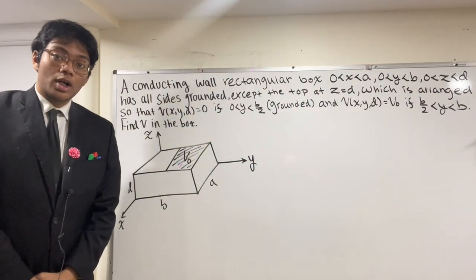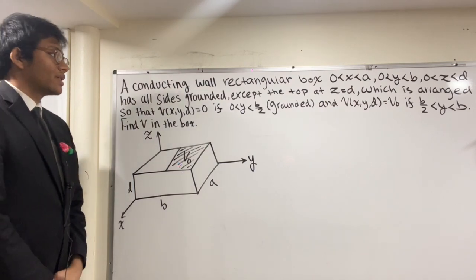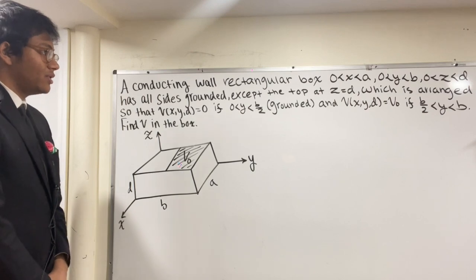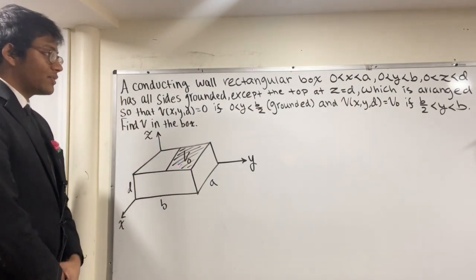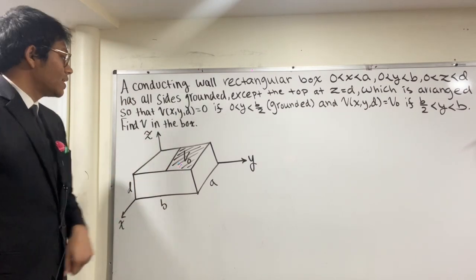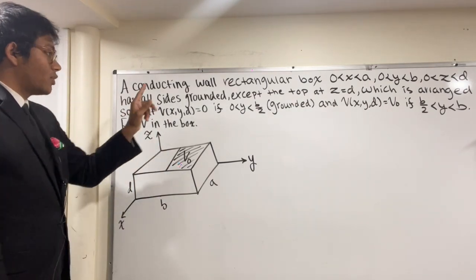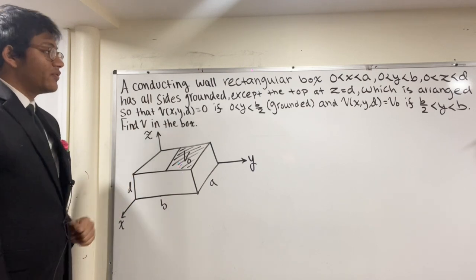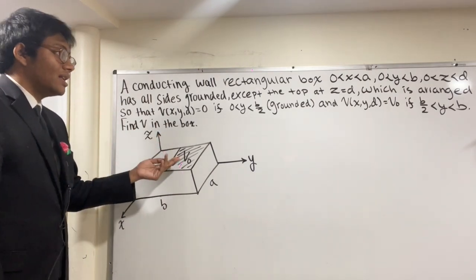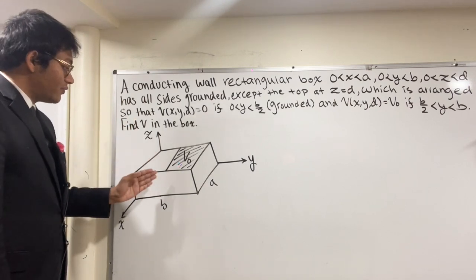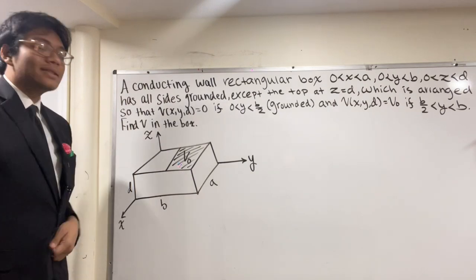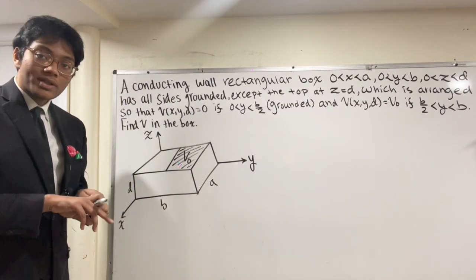Here is problem 1. A conducting rectangular box with x between 0 and A, y between 0 and B, and z between 0 and D has every side grounded except the top at z equals D. The top face is grounded when y is between 0 and B/2, but held at constant potential V₀ when y is between B/2 and B. Find the electrostatic potential inside the box.